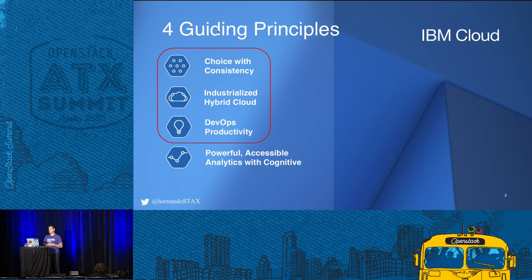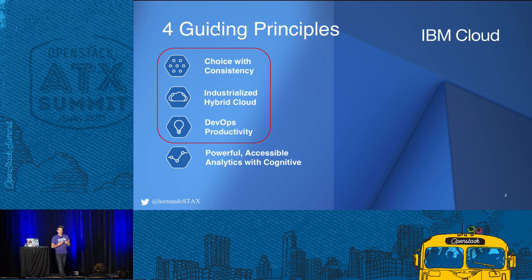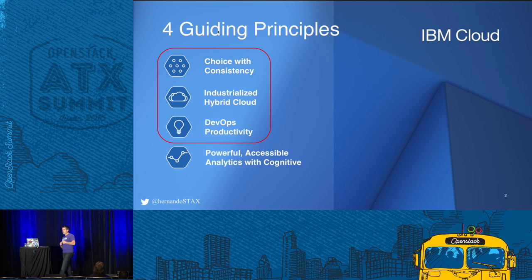And ultimately, DevOps productivity is where Duncan will talk. The guiding principle from IBM and IBM Cloud is that DevOps productivity means business velocity — giving developers the tools they need to build relevant, interesting, and game-changing applications for any industry.